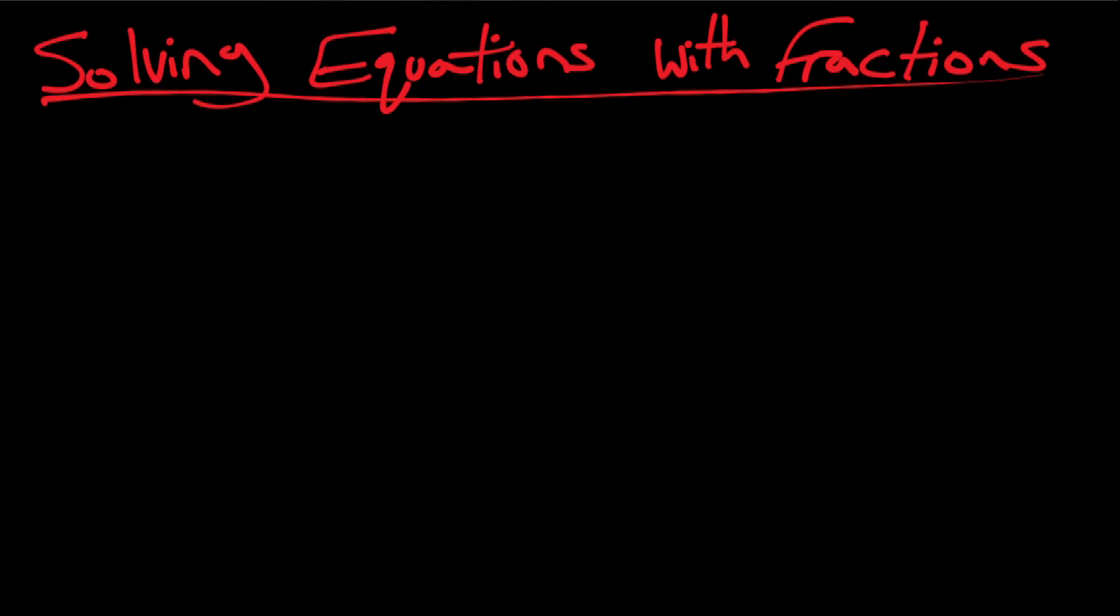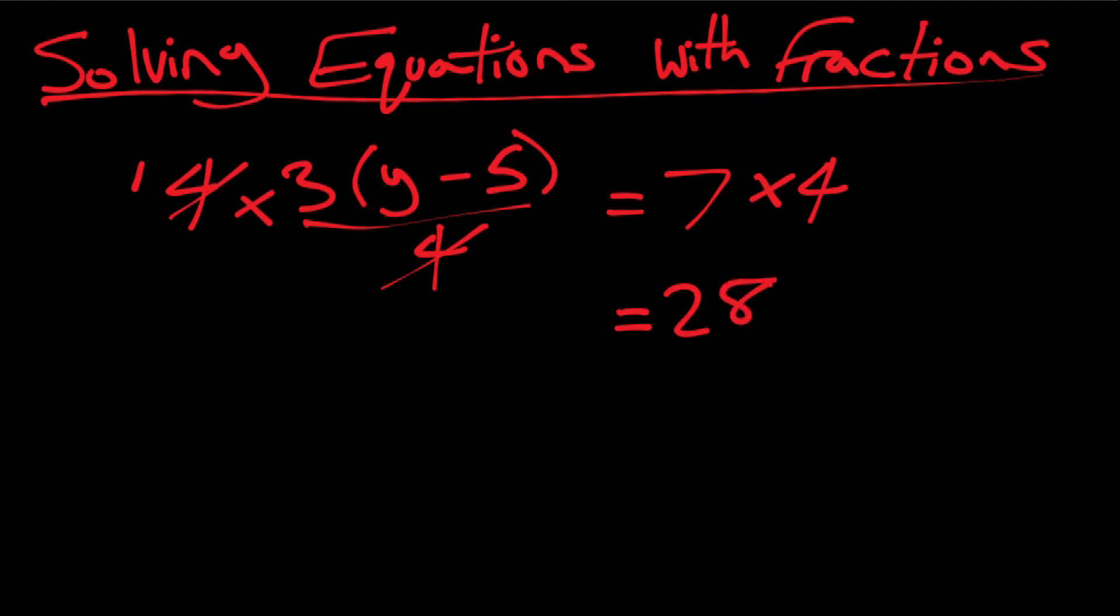Let's do three times y minus five all over four equals seven. So of course I want y to be by itself, so step one is to multiply both sides by four because I want to get rid of this four. So I could just do that, which four over four is one, and then on that side seven times four.